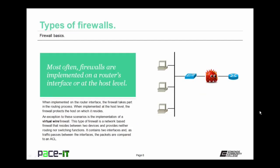Most often firewalls are implemented on a router's interface or at the host level. When implemented on the router interface, the firewall takes part in the routing process. When implemented at the host level, the firewall protects the host on which it resides. There is an exception — the implementation of a virtual wire firewall. This type of firewall is a network-based firewall that resides between two devices and provides neither routing nor switching functions. It contains two interfaces, and as traffic passes between those interfaces, the packets are compared to an ACL. It's usually not used to protect a specific host and does not take part in the routing function.